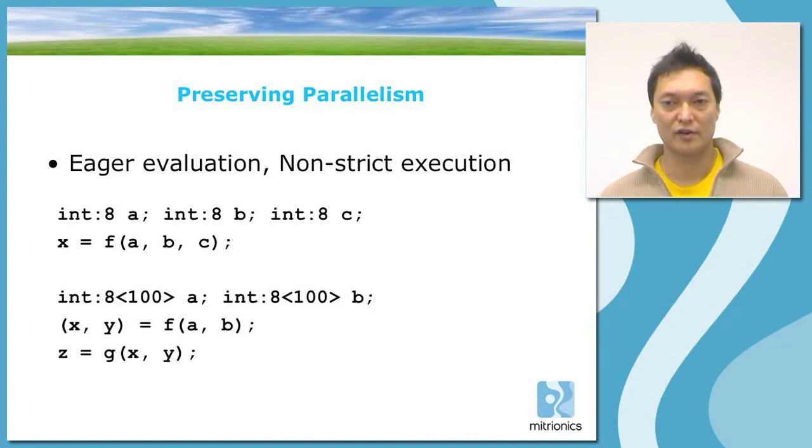In this example, we have a function f taking two collections of data, a and b. Each one of these two collections has 100 values in them. With non-strict execution expanded to collections of data, the function f can start operating as soon as there are some data from a and b available. That is, the entire collection a and the entire collection b does not have to be available at the same time, as long as there are some values that f needs. Of course, it has to be the values that f needs first that have to be available first.